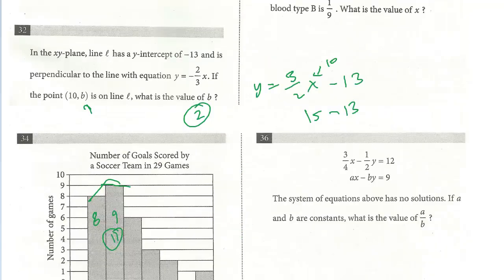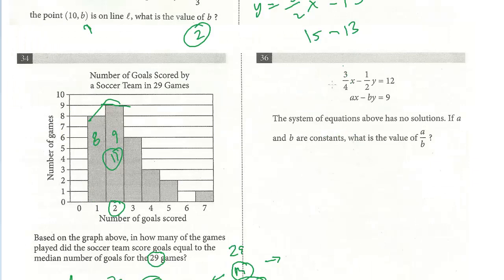Last one on this page is number 36. The system of equations above has no solution. If a and b are constants, what's the value of a divided by b? We've talked about this before. What types of lines have no solutions? That means they never intersect. They would be parallel. They have the same slope and a different y-intercept.